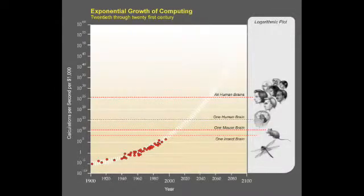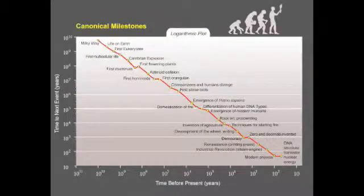If we place key milestones of both biological evolution and human technological development on a single graph, plotting both axes on logarithmic scales, we find a reasonable straight line: continual acceleration, with biological evolution leading directly to human-directed development.